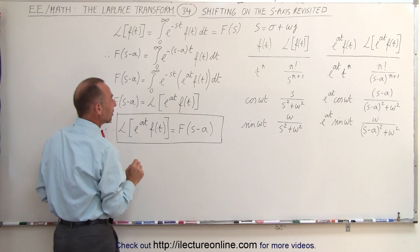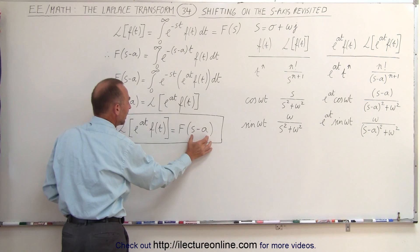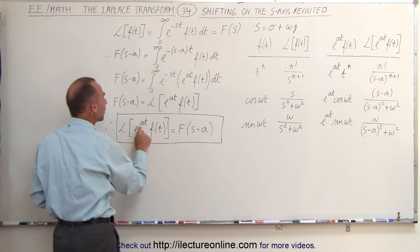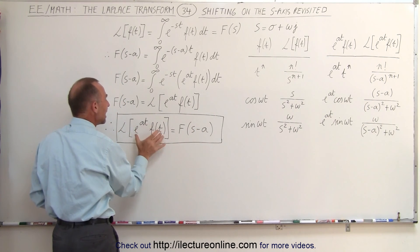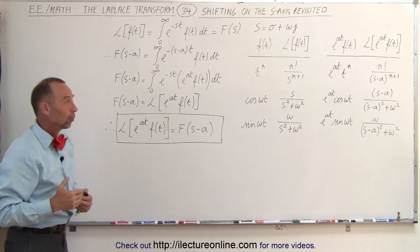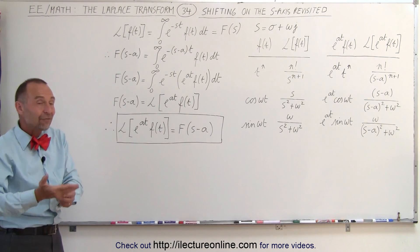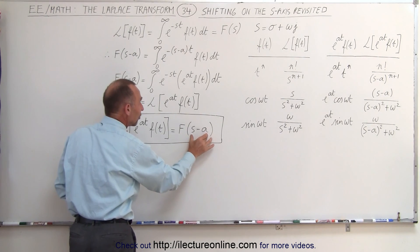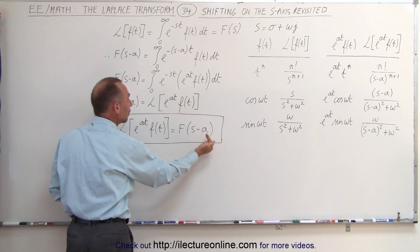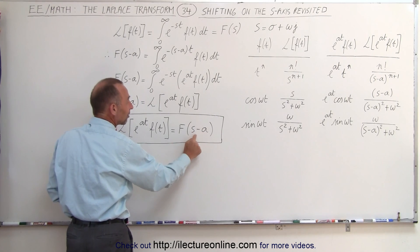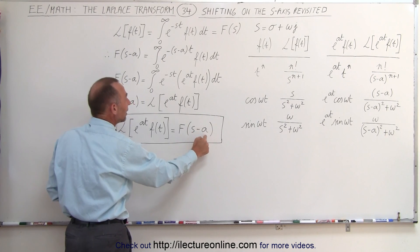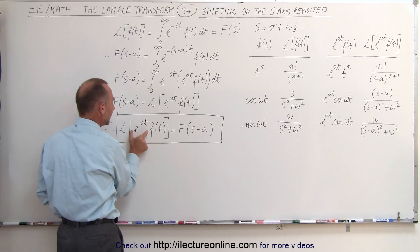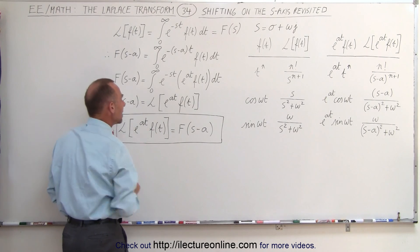This means that if we have a shift in the S domain, it shows up as an extra term E to the A T in the time domain. So whenever we take the inverse Laplace transform of a function in the S domain and there's a shift like S minus A, this can be accounted for in the time domain by the term E to the A T.